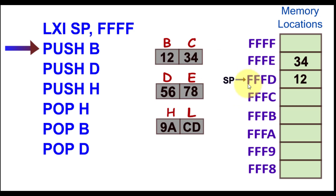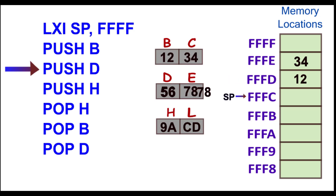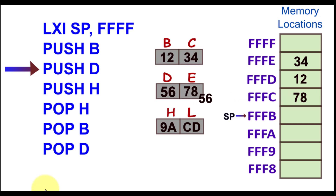After PUSH B, the stack pointer is at FFFD. With the PUSH D instruction, the stack pointer first decrements — it was at FFFD — and the contents of E are stored, then it decrements again and the contents of D are stored at FFFB.